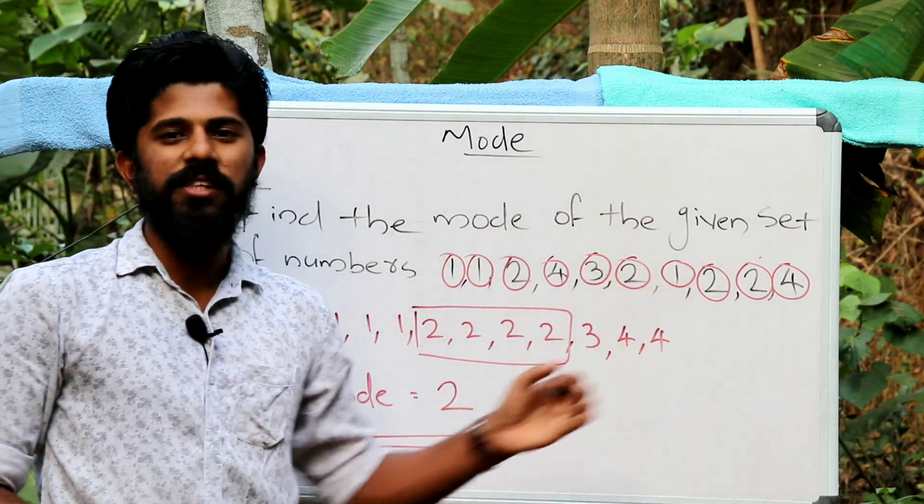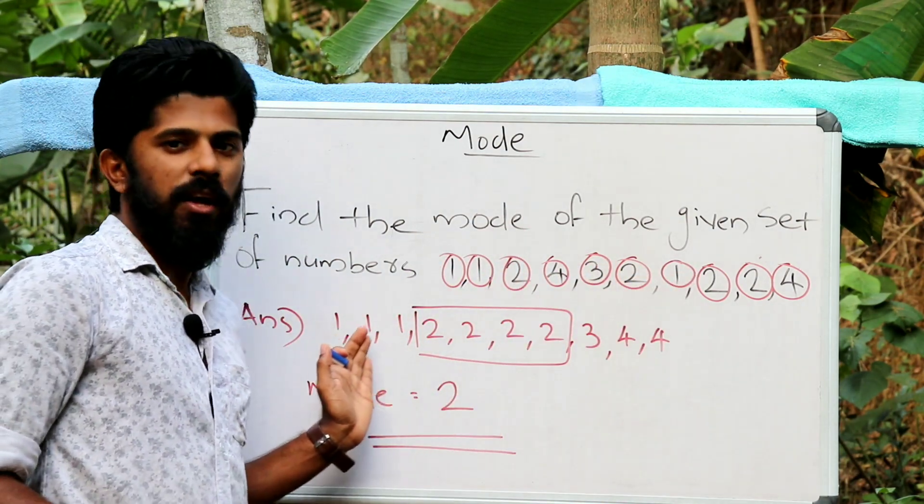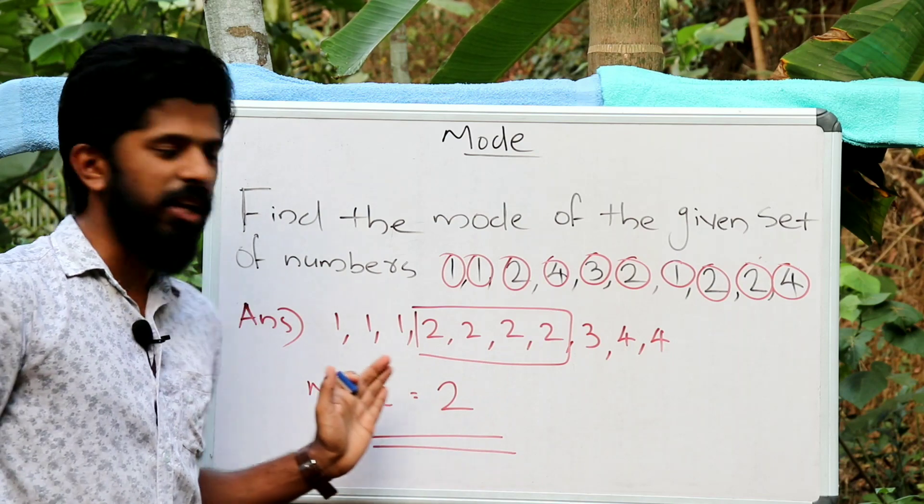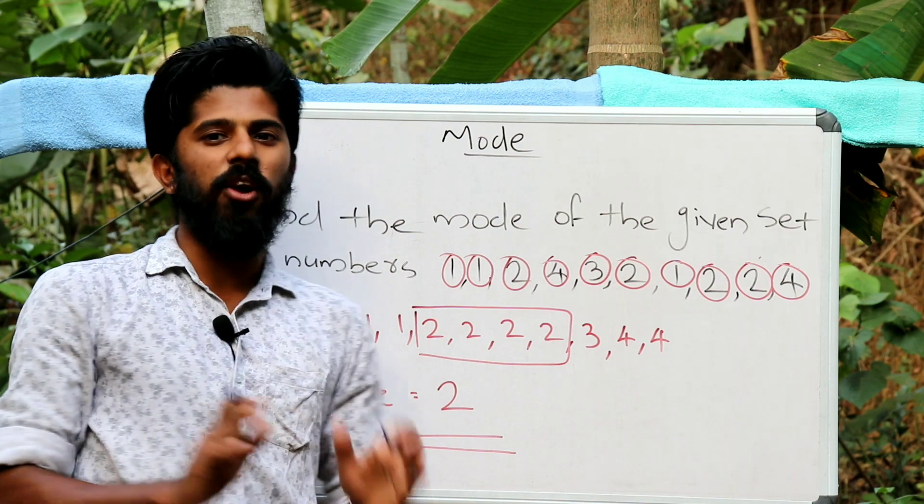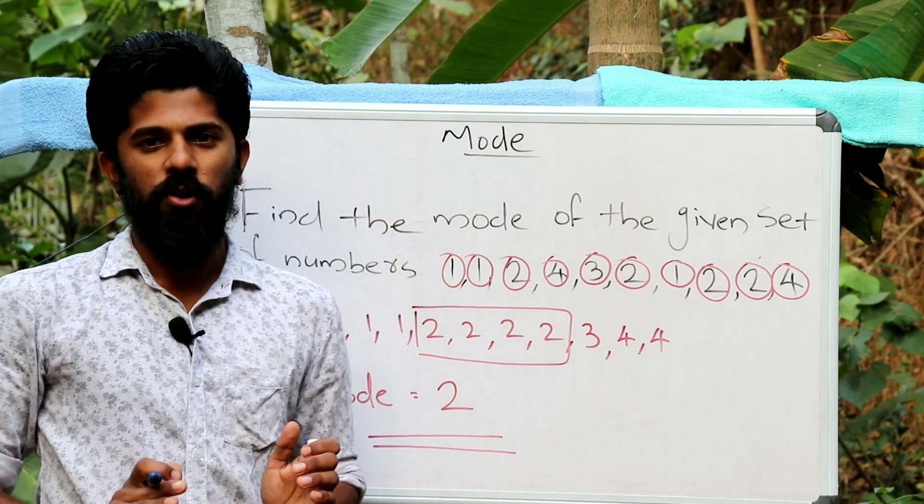So what is the number of the numbers in the middle of the ascending order, in the middle of the ascending order? What is the number of the number? That is the mode.